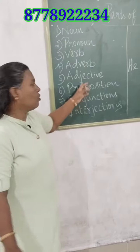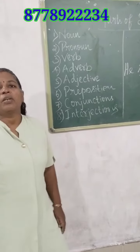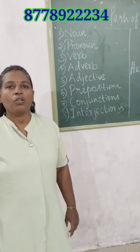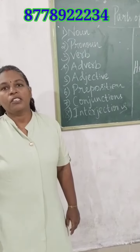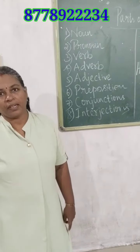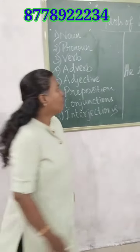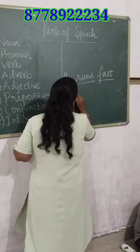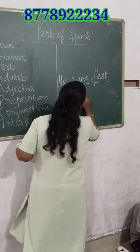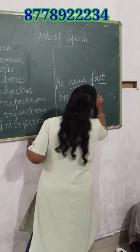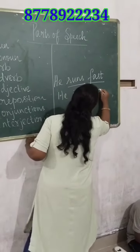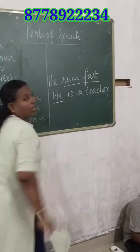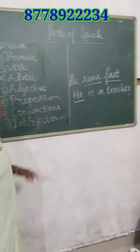Then we'll go to adjective. Adjective is nothing but a word which tells more about a noun. It is also called a noun modifier. For example, he is a tall teacher — it qualifies a noun. So adjective is a word which qualifies a noun.